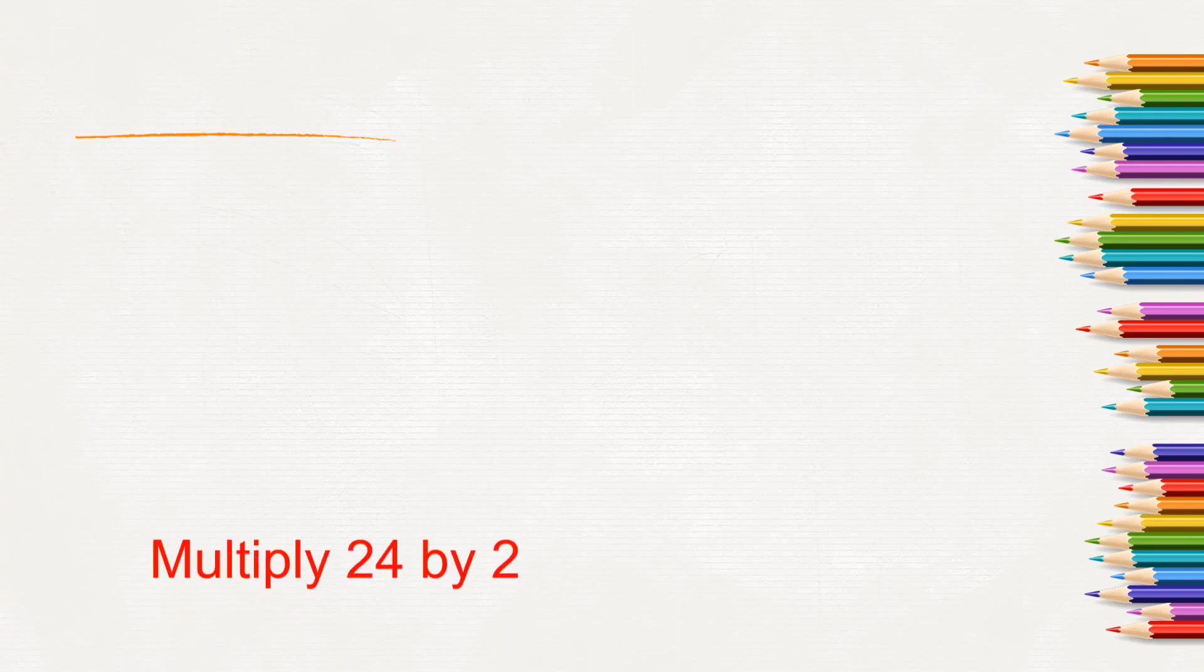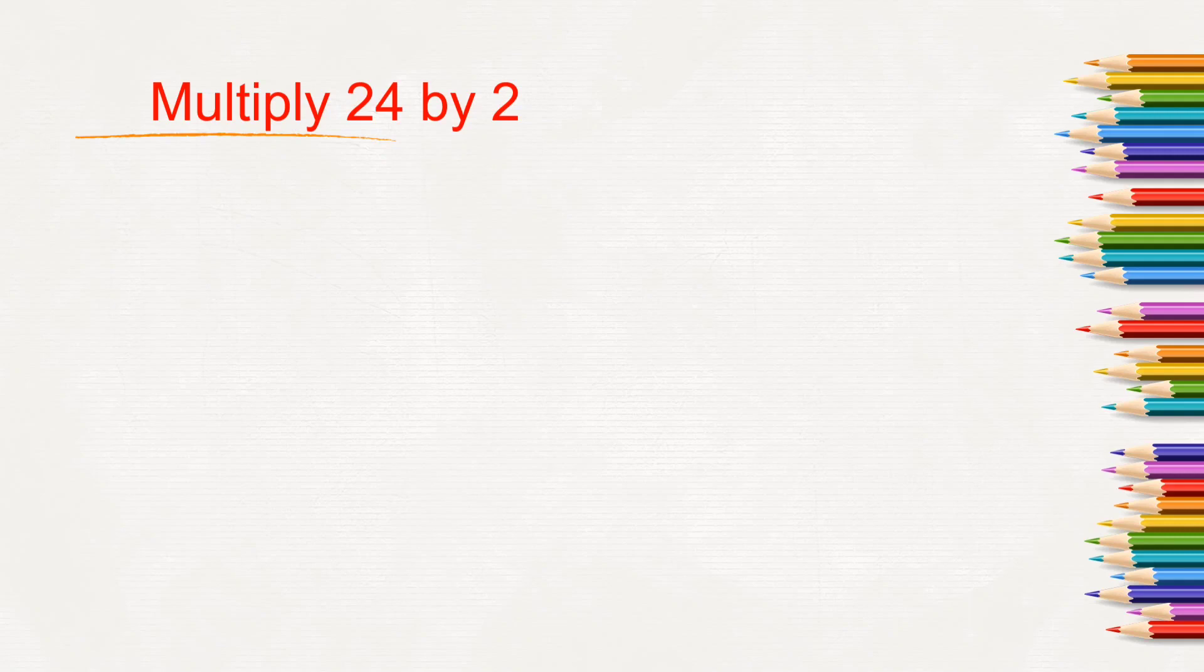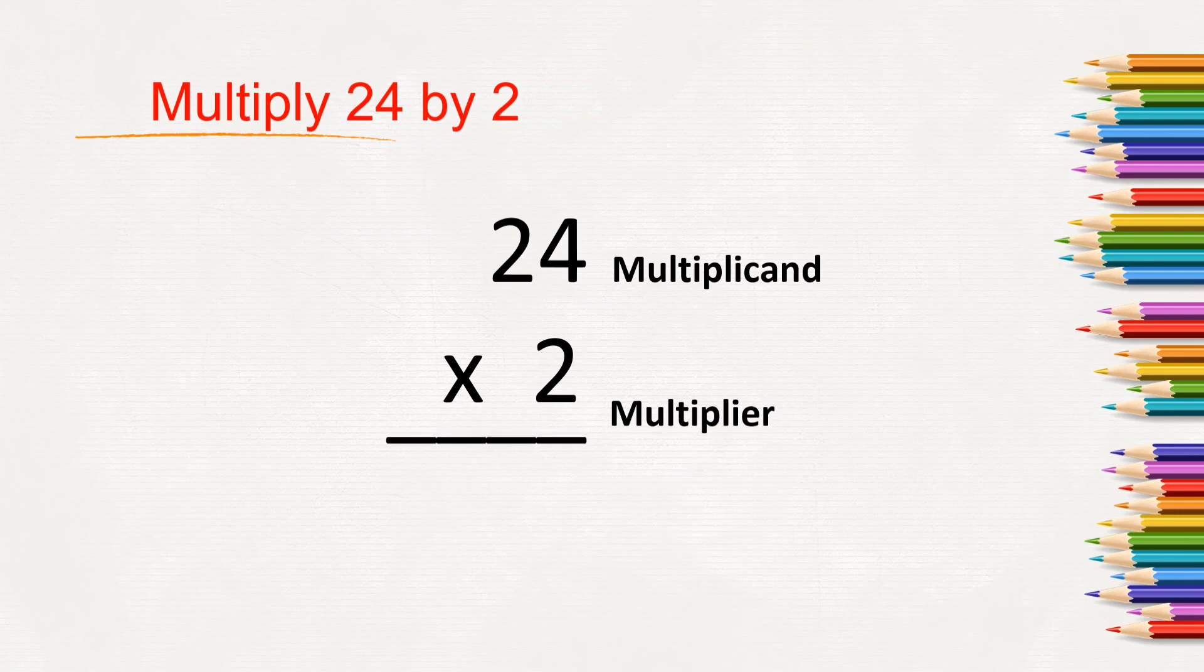Here we need to multiply 24 by 2. Let's write it in vertical way, that is one below the other. Now here 24 is the multiplicand and 2 is the multiplier. And this is the multiplication sign. Cross sign is the multiplication sign.